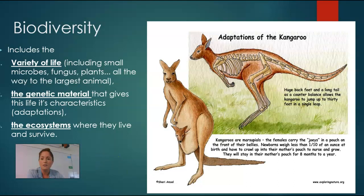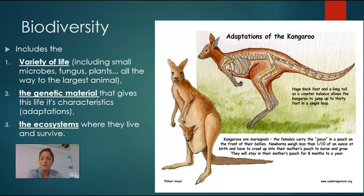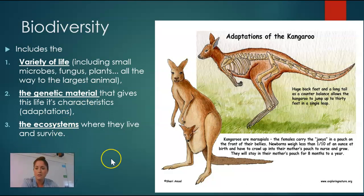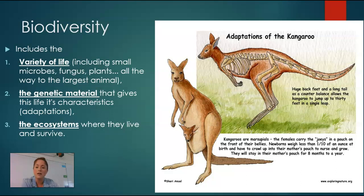Before we start, I thought it might be good to go ahead and define what biodiversity is. Biodiversity is all of the variety of life on Earth. We can think of even bacteria and fungus and plants, animals obviously — all the different variety on Earth would be included in that description of biodiversity. But it also includes the genetic materials and the DNA that gives life to those characteristics, giving them adaptations that have allowed them to survive. We also talk about biodiversity in terms of ecosystems — where they live and survive.